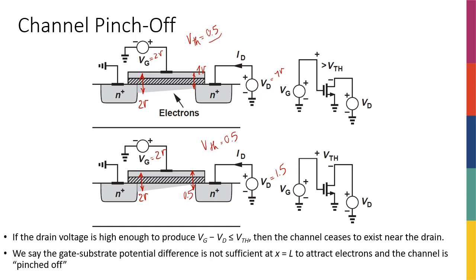This is the moment the channel is barely created at the drain end. At that voltage, the transistor is at the verge of having a free electron at that point. Right at the drain, the density of free electrons is going to be equal to zero. This situation is called channel pinch-off.